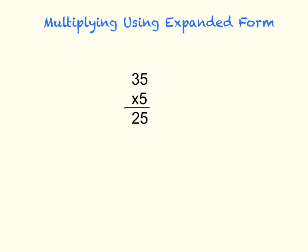Now let's multiply the tens. 5 times 3 tens is 150.